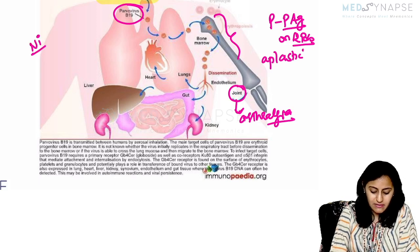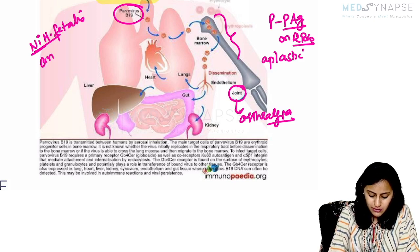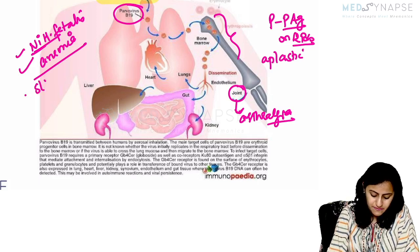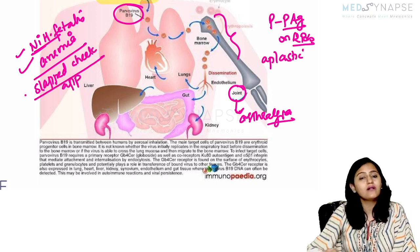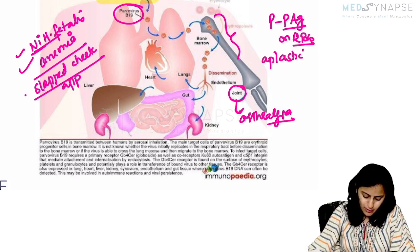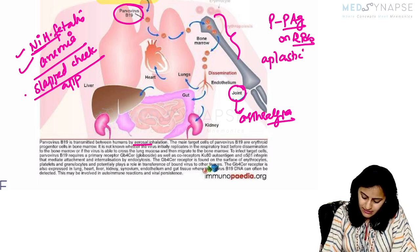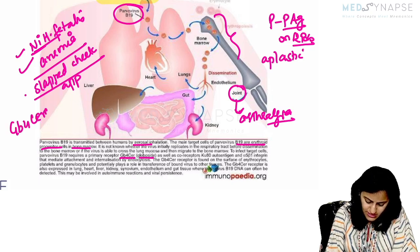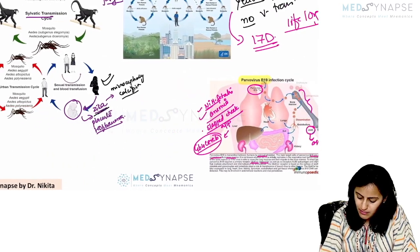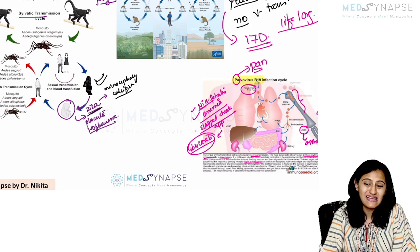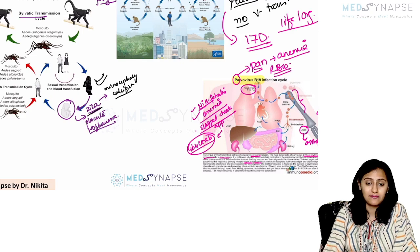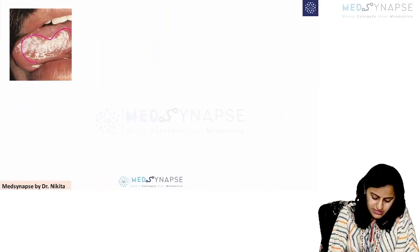Parvovirus B19 leads to non-immune hydrops fetalis and fetal anemia — very important. It causes the Fifth Disease (Erythema Infectiosum) with the slapped cheek appearance. Transmission is via aerosol; the main target is erythroid progenitor cells in the bone marrow. The receptor is GB4 (globoside). Remember: bone marrow, aplastic crisis, binds RBC progenitor cells, pancytopenia pattern.